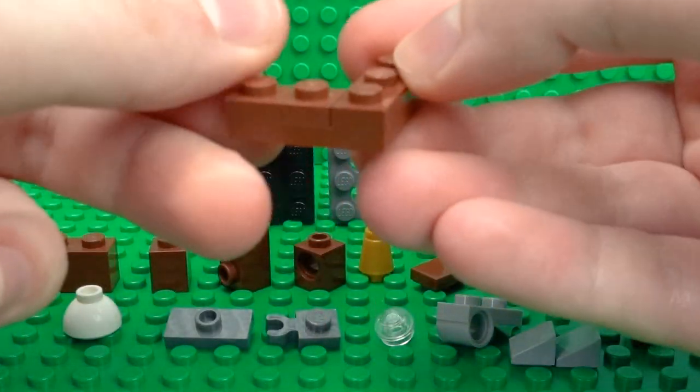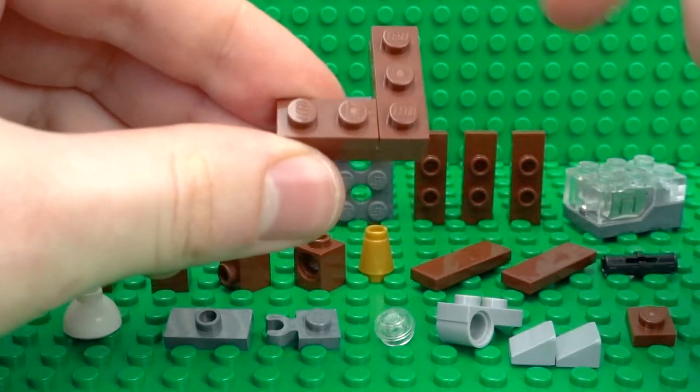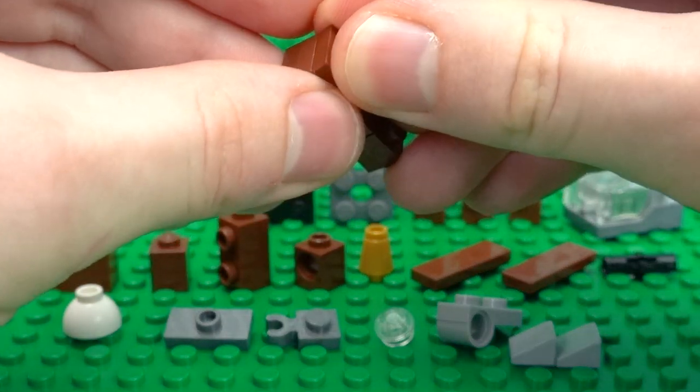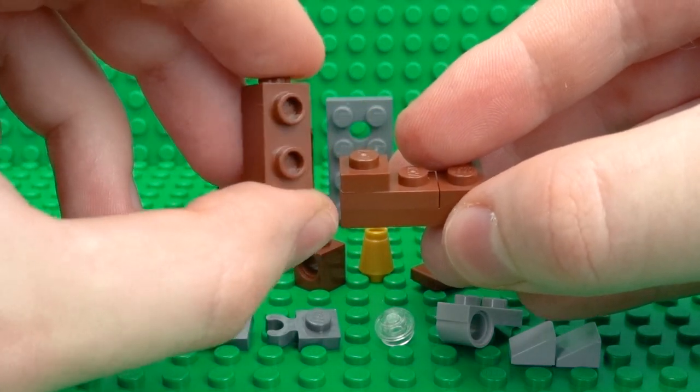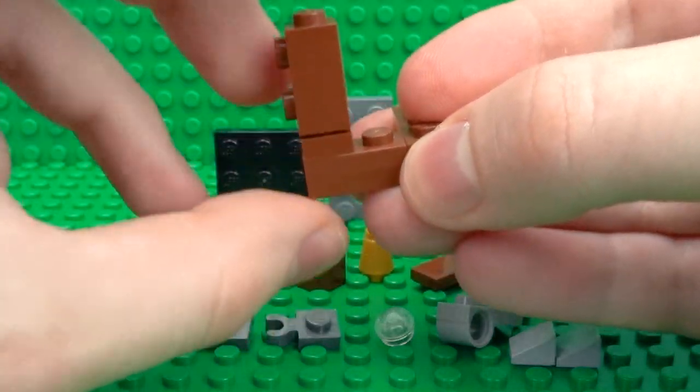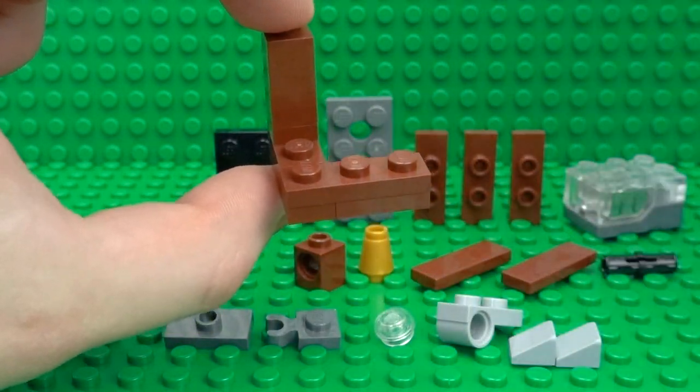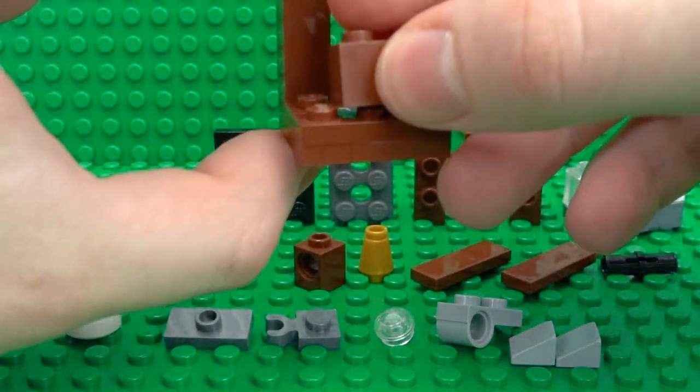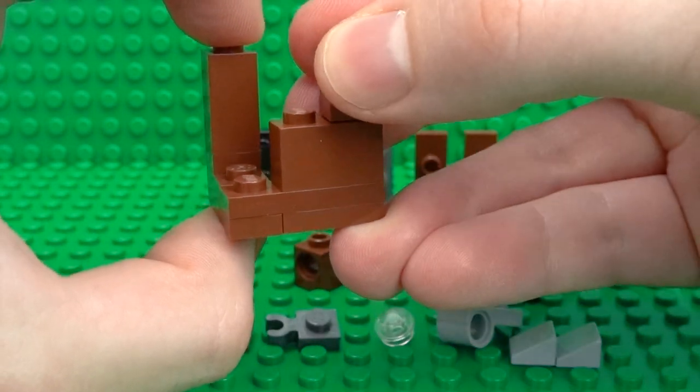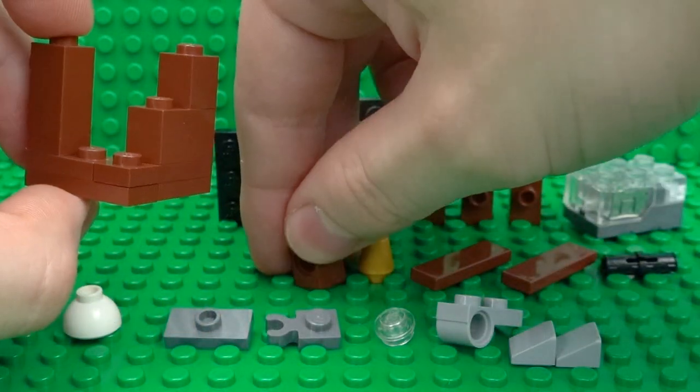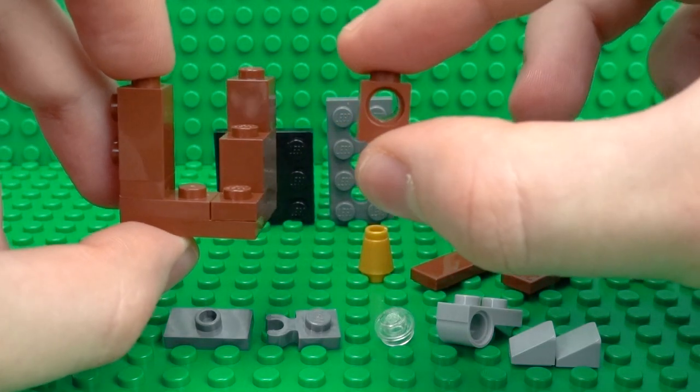Then over on this side, just clip a one by one plate and a modified one by one brick with the two studs on the side. Then over on this side, simply attach a regular one by two brick with a normal one by one brick and then a technic hole one by one brick over on the gap.